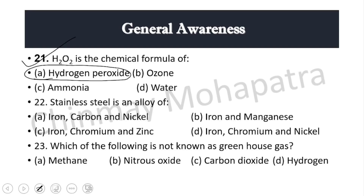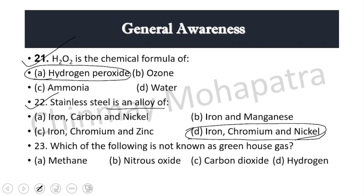Question 22: Stainless steel is an alloy of — right answer: iron, chromium and nickel. Stainless steel is composed of iron, chromium and nickel.